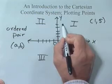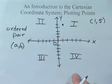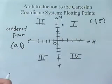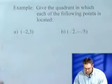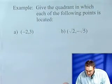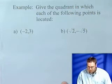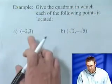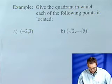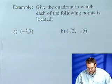So let's practice plotting a couple points. Let's give the quadrant in which each of the following points is located. So we want to label the point and then tell if it's in quadrant one, two, three, or four.